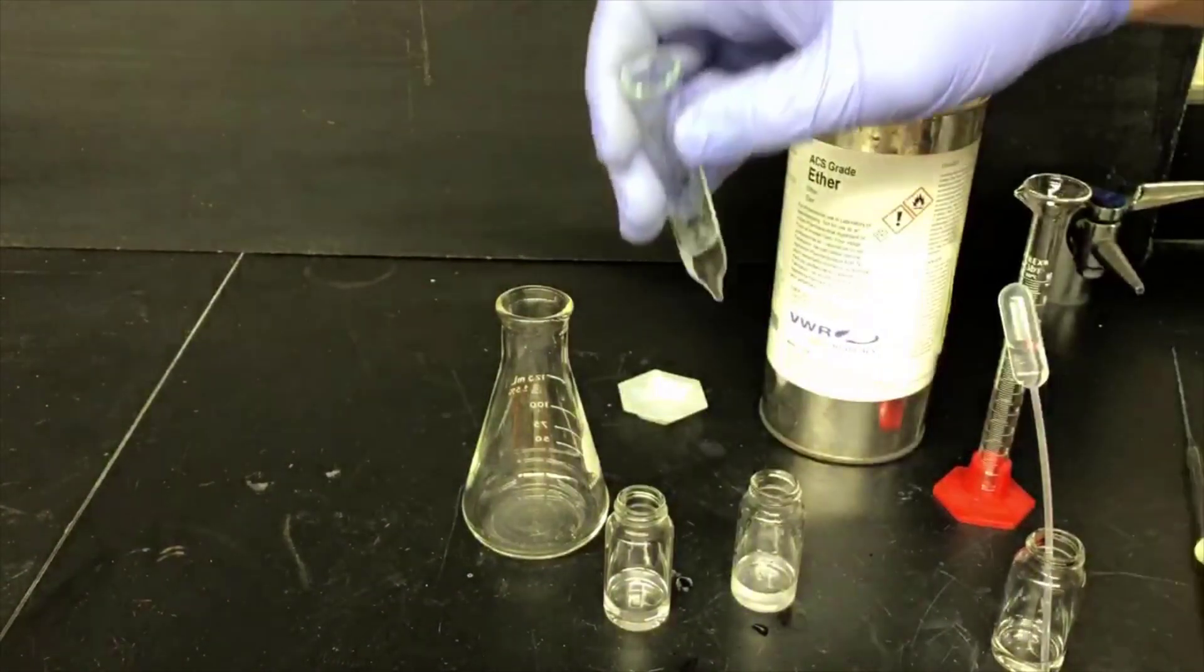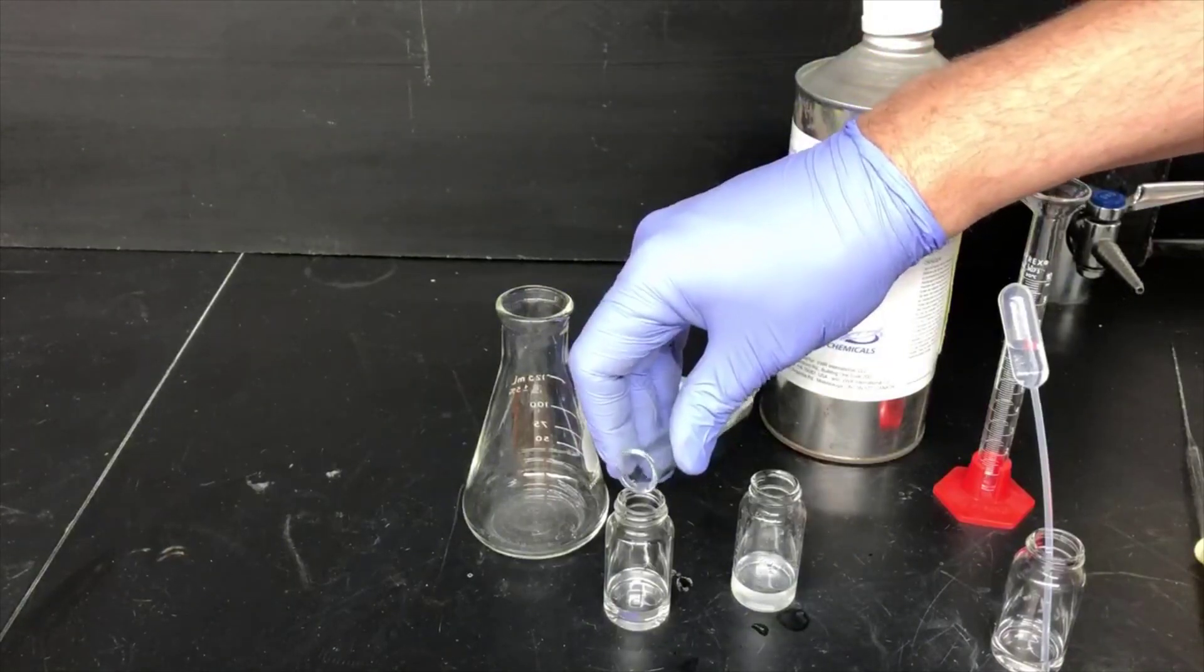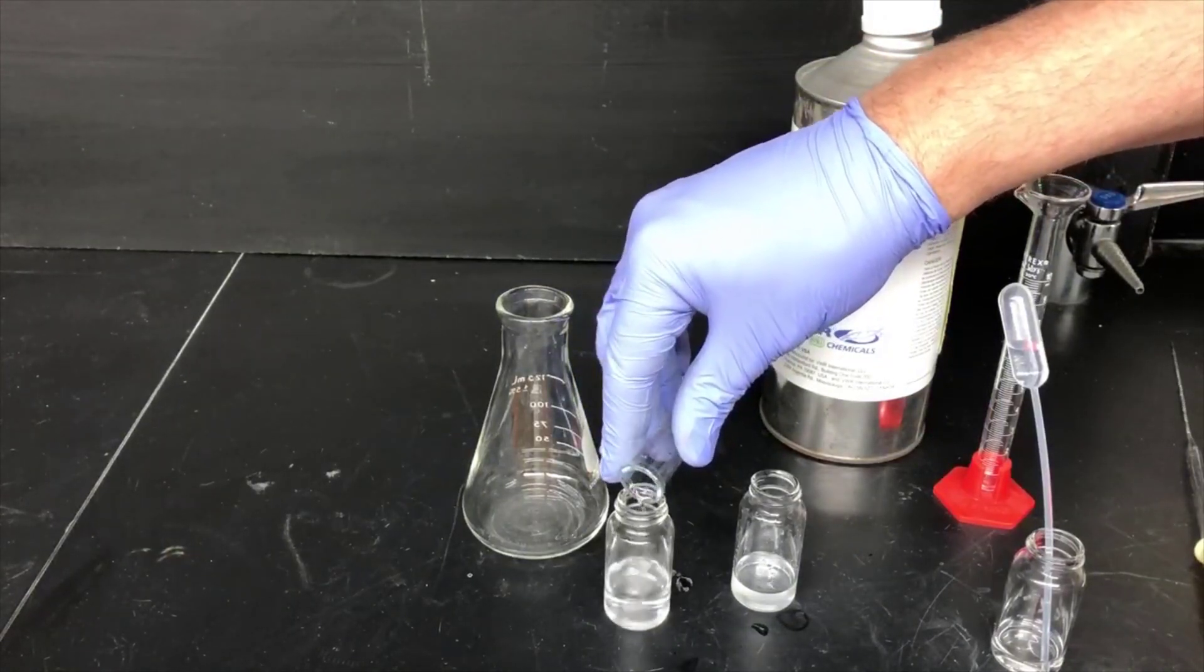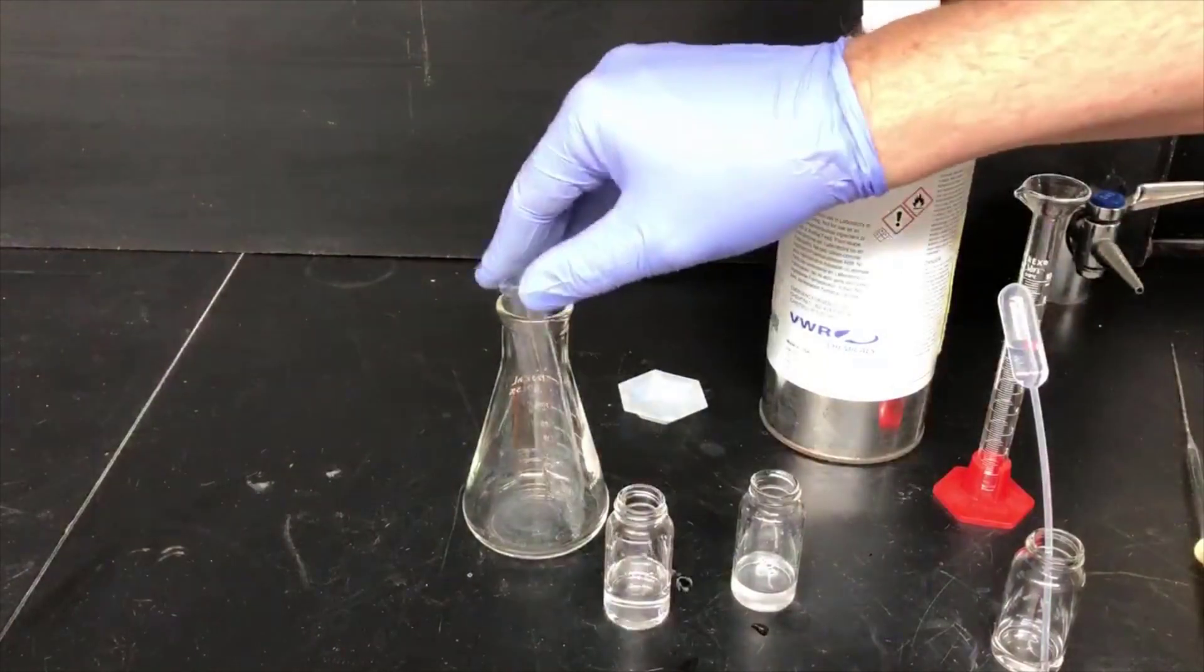And pour the top layer out the top into the vessel that contains the other ether layer. We're combining ether layers here. This is where the cyclohexanone product is.